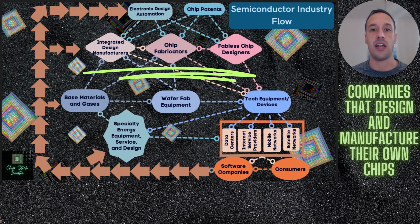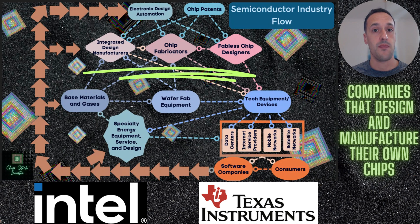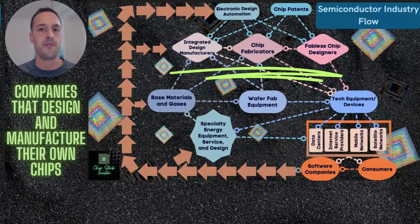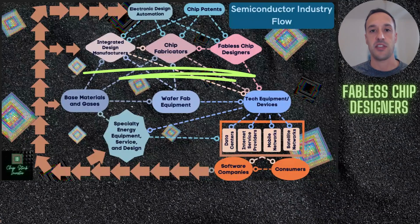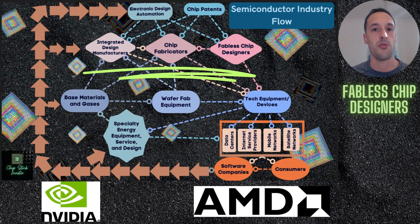The IDMs — integrated device manufacturers — would be like an Intel or a Texas Instruments. They design their own chips and also manufacture their own chips that they then sell to their customers. Sometimes IDMs, and definitely fabless chip designers, use chip fabricators. That would be like Taiwan Semiconductor Manufacturing or Global Foundries. The fabless designers section gets a ton of attention because companies like NVIDIA and AMD are fabless — they only design chips and dabble in software. You can think of them as big, giant engineering and technological research companies.